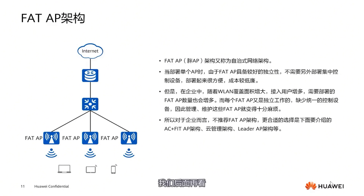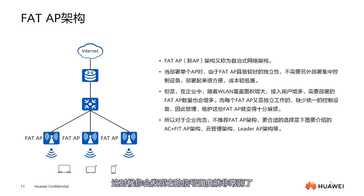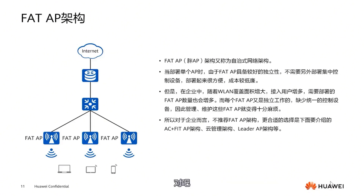When deploying a single AP, it's generally okay to cover an 80 square meter residence. But for an area of 120 to 130 square meters, you will find that the signal strength becomes very weak. This is just in a home environment. In a business context, it's clear that it cannot meet enterprise requirements. This leads us to the concept of ESS, which involves deploying multiple APs.